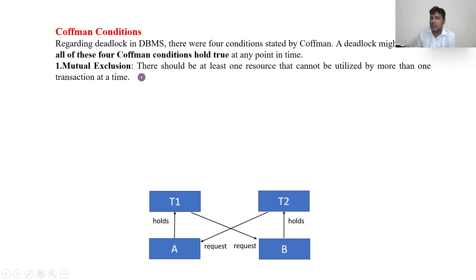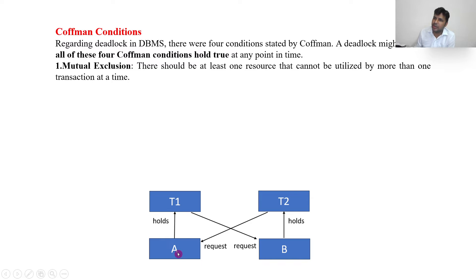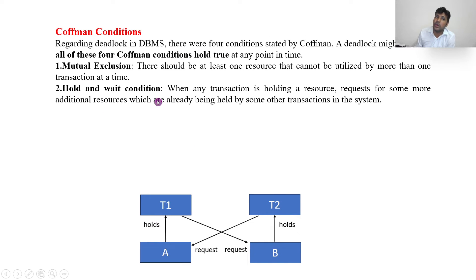The first condition is Mutual Exclusion — there should be at least one resource that cannot be utilized by more than one transaction at a time. Here, T1 holds an exclusive lock on A. When T2 requests it, it cannot be shared. If it were a shared lock, T2 could access it and no deadlock would occur. But with exclusive locks, resources cannot be shared until released.